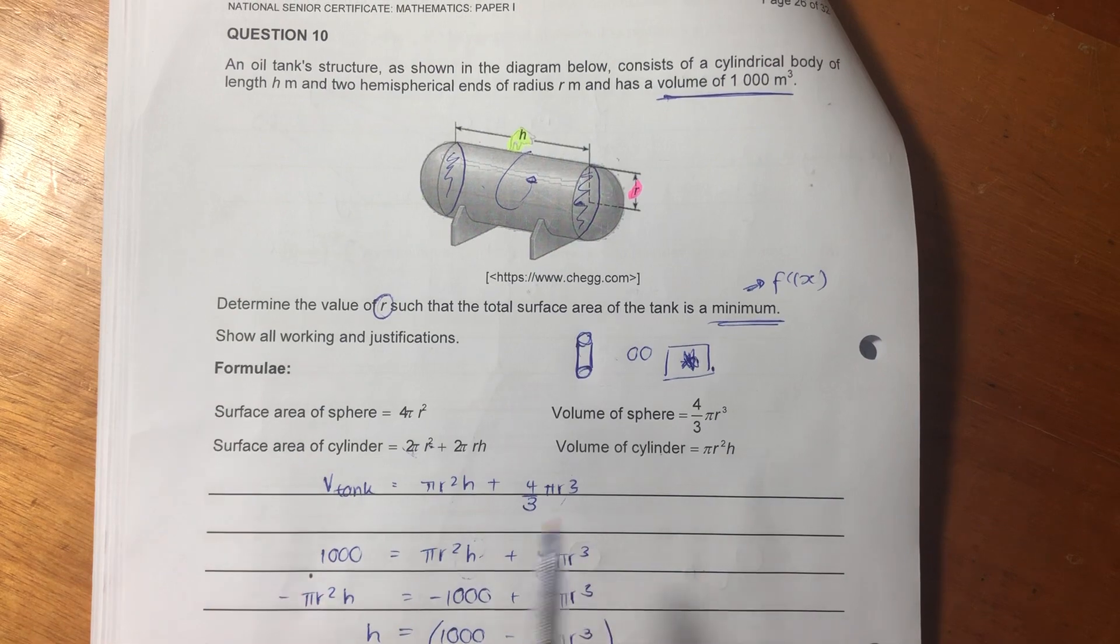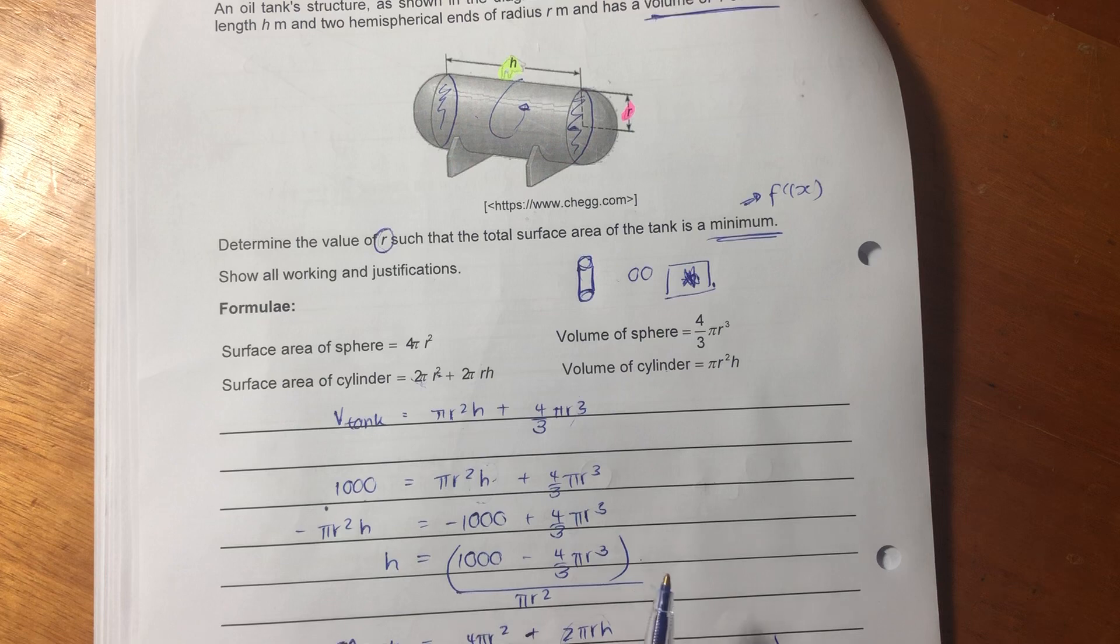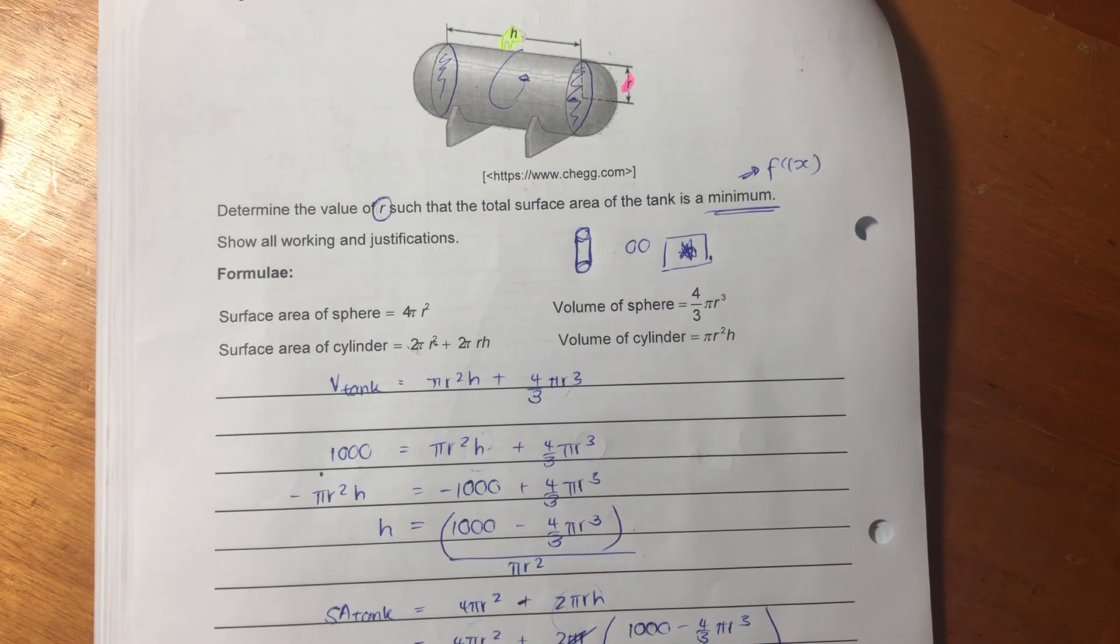It's important to be able to conceptualize that in your mind. So, I've done that. I've said it equals a thousand, and then I've basically solved here to get h by itself.